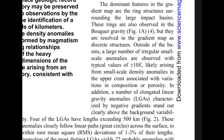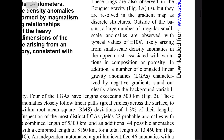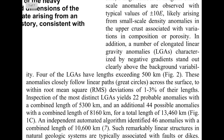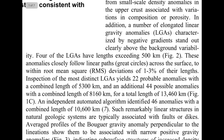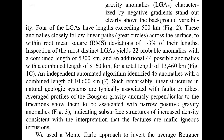In addition, a number of elongated linear gravity anomalies — LGAs — characterized by negative gradients stand out clearly above the background variability. Four of the PLGAs have lengths exceeding 500 kilometers. These anomalies closely follow linear paths, great circles across the surface, to within RMS deviations of 1 to 3 percent of their lengths. Inspection of the most distinct PLGAs yields 22 probable anomalies with a combined length of 5,300 kilometers, and an additional 44 possible anomalies with a combined length of 8,160 kilometers, for a total length of 13,460 kilometers. An independent automated algorithm identified 46 anomalies with a combined length of 10,600 kilometers.